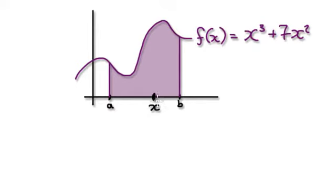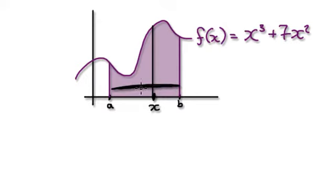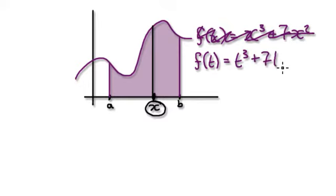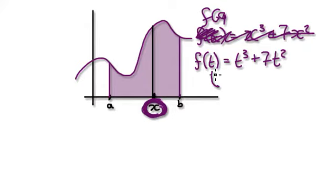We are going to reserve x to represent this location here, where x can slide back and forth. So because we're reserving x to represent something else, we cannot call this f of x. We have to change the name. So let's call it f of t — t cubed plus 7t squared. This t here is what's called a dummy variable; we're just going to use it and then throw it away.